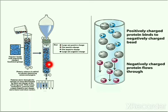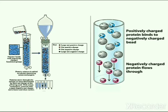Now we will try to understand the process of ion exchange chromatography using the following diagram. Ion exchange chromatography is most often performed in the form of column chromatography. However, there are also thin layer chromatographic methods that work based on the principle of ion exchange. This picture shows the complete ion exchange process. Here, this column is filled with polymer beds of negatively charged functional groups, which is called the stationary phase.